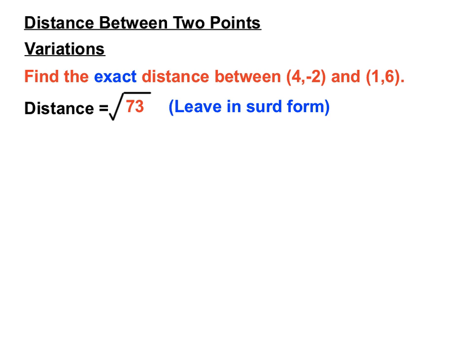And I'm going to leave that in surd form because that word exact means that we don't use our calculator and get some sort of a decimal here. An exact distance is left in surd form. So we'll resist the temptation to put that into our calculator and get a more simple answer because they want it to be exact. We don't want to round off a decimal there.